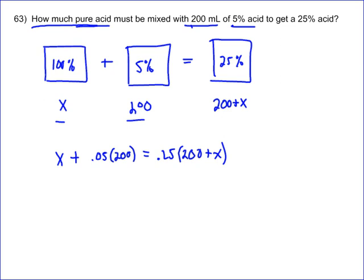Now let's just solve the equation. So it's going to give you x plus, 5% of 200 is just 10, equals 25% of 200, which is 50, and then plus 0.25x.